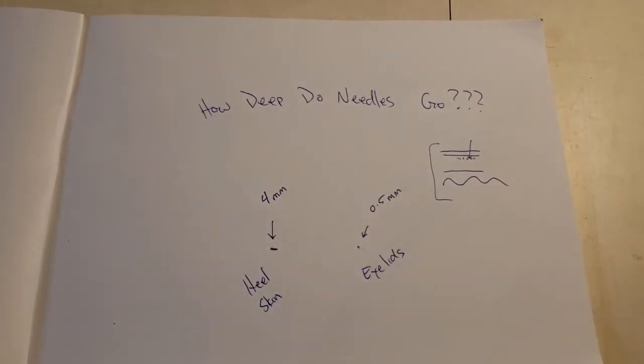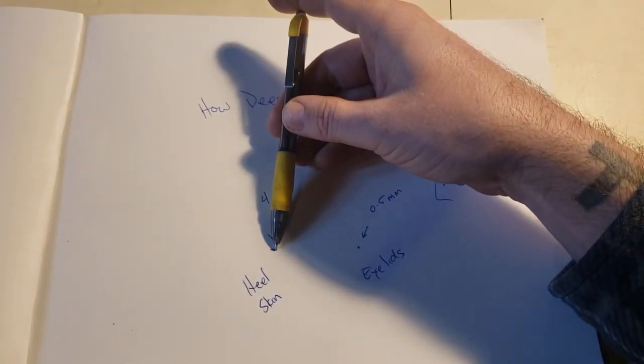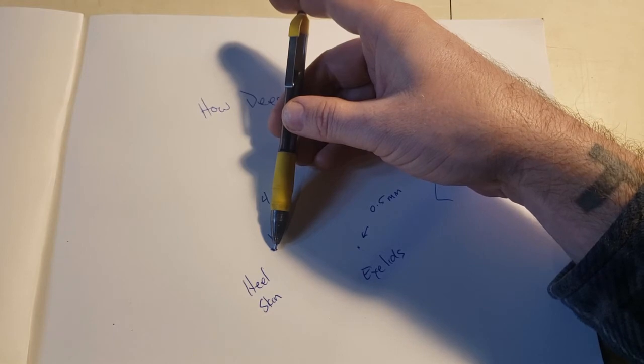Look at the tip of a ballpoint pen. It's like three of them across. And that's your heel, the thickest skin on your body.